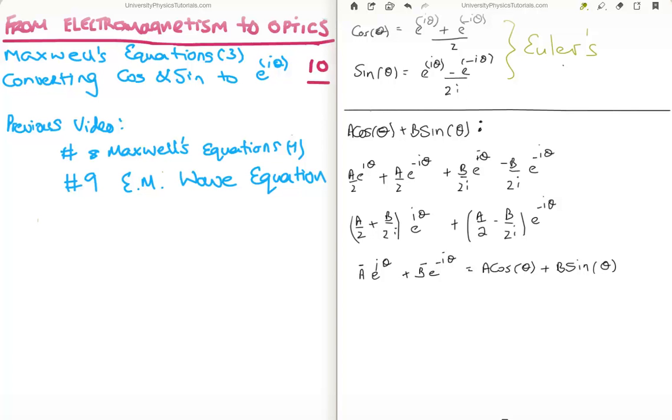So, what we're going to do here is convert a constant, capital A, multiplied by cosine of theta, plus a constant, capital B, multiplied by sine theta into complex exponentials. So, let's go ahead and do that. Well, first of all, we know that cosine is E to the i theta, plus E to the minus i theta over 2. So, I have A over 2, E to the i theta, and A over 2, E to the minus i theta.